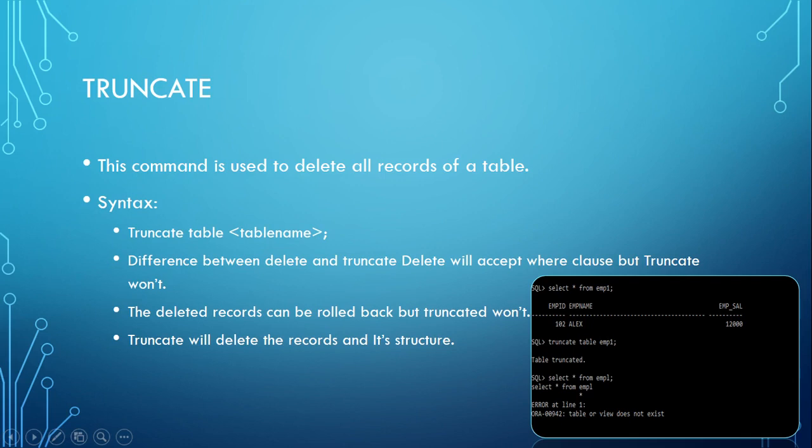You can see the sample example here. Selecting all from EMP1 shows employee ID, employee name, and salary — there is one record. Now using TRUNCATE TABLE EMP1, the table has been truncated. When trying to query it again, it says the table itself is not existing. That means it deleted the records as well as the structure of the table.